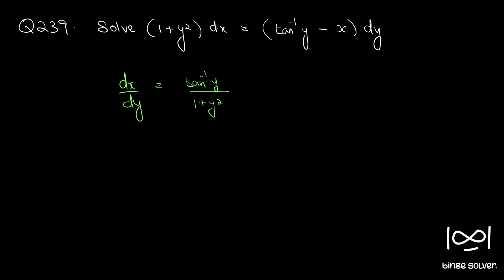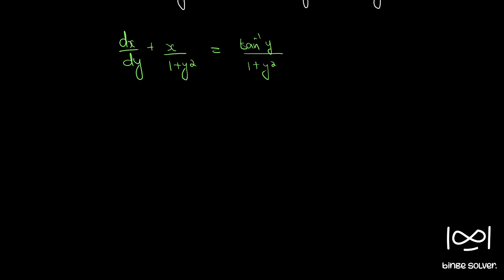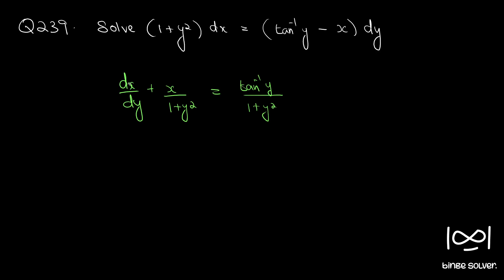Instead of writing minus x/(1 + y²), we bring that term to the LHS. So we get dx/dy plus x/(1 + y²) = tan⁻¹y. We have rearranged this into the standard form for a linear differential equation with x as the dependent variable and y as the independent variable.